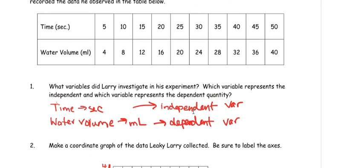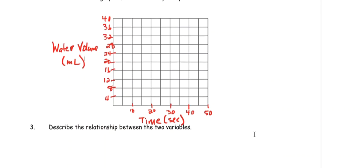And now, you're just going to plot these points. So, it's going to be five, four. Ten, eight. Fifteen, twelve. Twenty, sixteen. Twenty-five, twenty. Thirty... And your graph should look something like this.